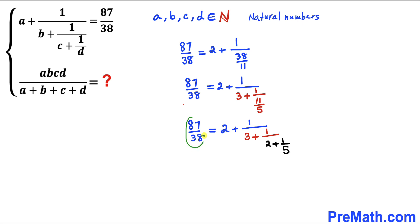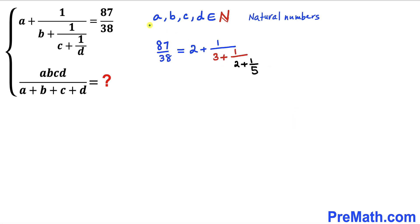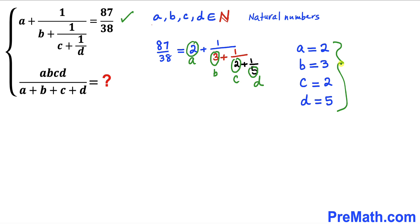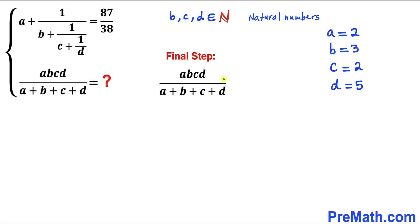Now let's compare the two equations. Looking at the original equation and the nested fraction we derived, we can see that 2 is our a, 3 is our b, 2 is our c, and 5 is our d. All of these numbers are natural numbers.